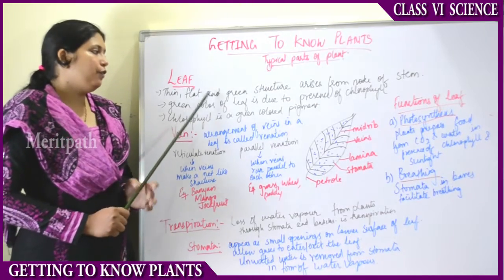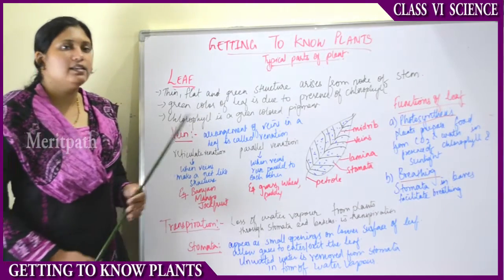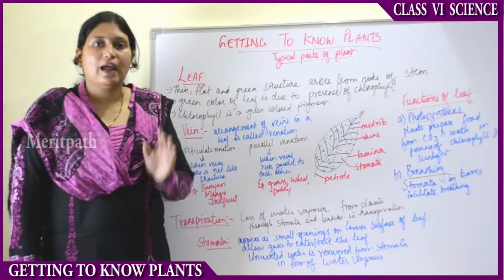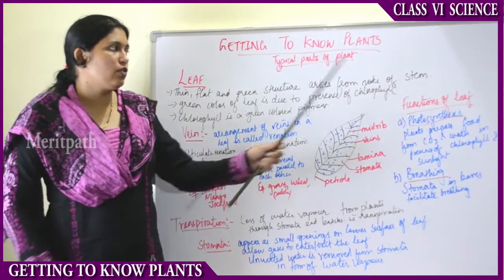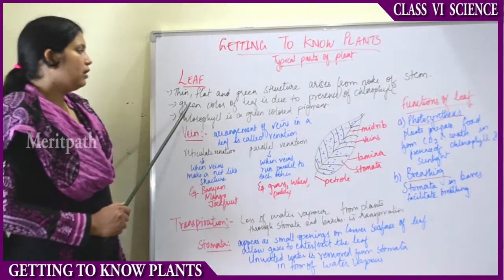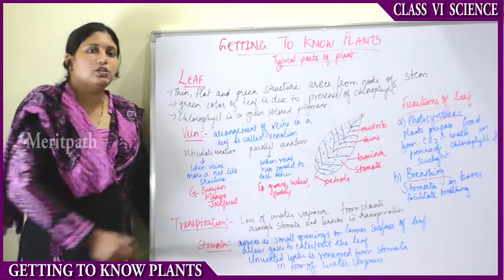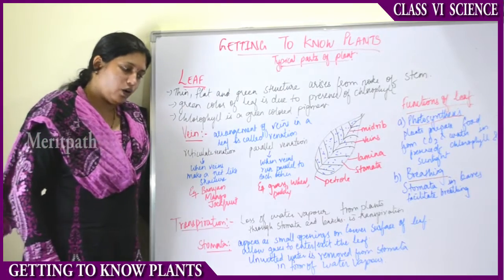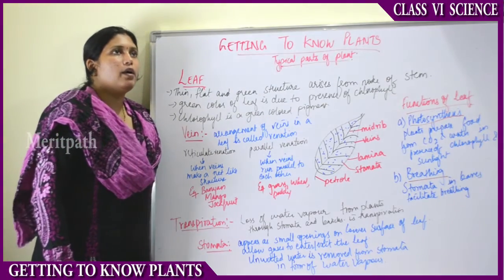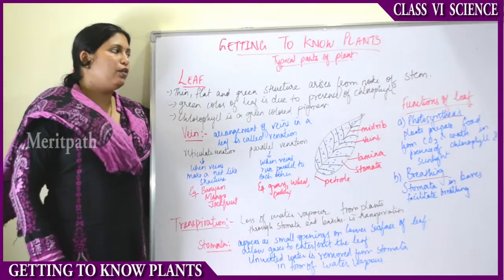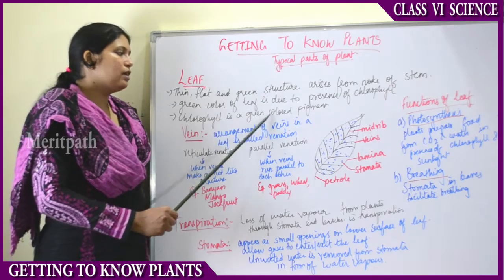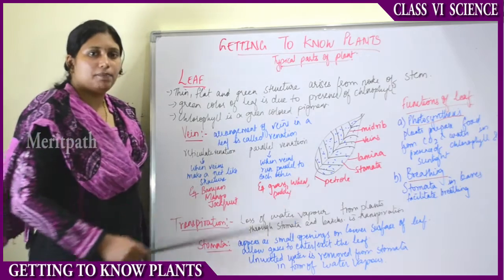A leaf is a thin, flat, and green structure that arises from the node of the stem. The green color of the leaf is due to the presence of chlorophyll, a pigment found in leaves that gives it its exclusive green color. Chlorophyll is a green colored pigment.